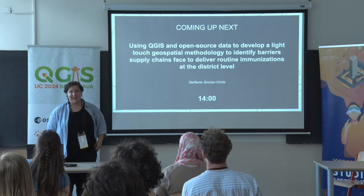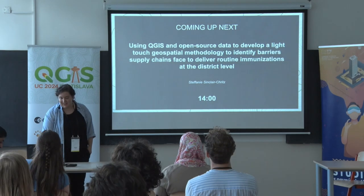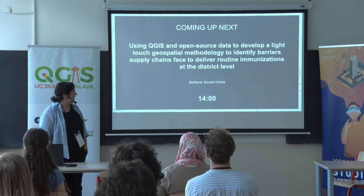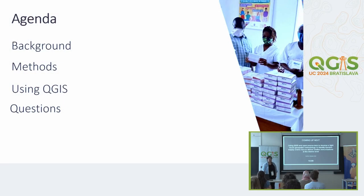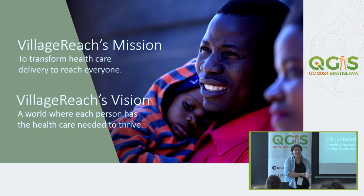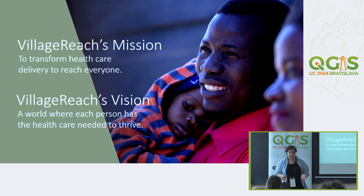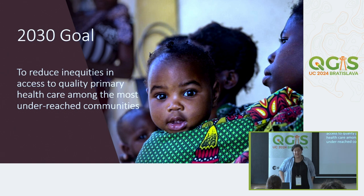My name is Stephanie Sinclair-Kritz, and I'm going to be talking about how we use QGIS to identify zero-dose children in four countries. I'm a data manager at VillageReach, a nonprofit organization that works in Sub-Saharan Africa and the United States. Our mission is to transform health care delivery to reach everyone, and our vision is a world where each person has the health care needed to thrive. One of our 2030 goals is to reduce inequities in access to quality primary health care among the most underreached communities.